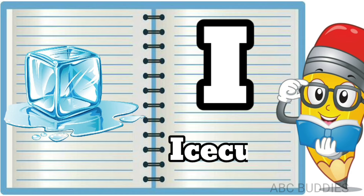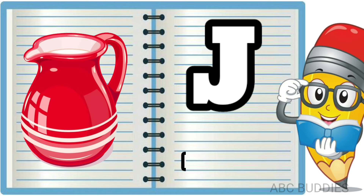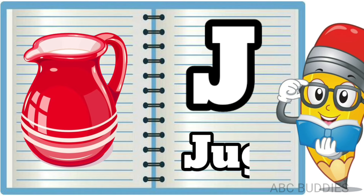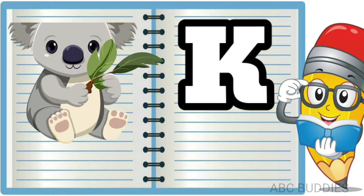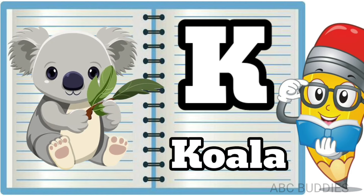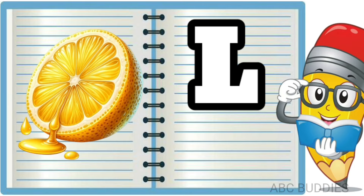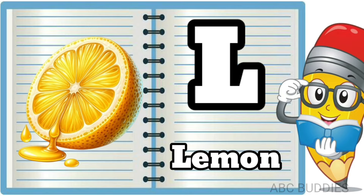I is for Ice Cube. J is for Jug. K is for Koala. L is for Lemon.